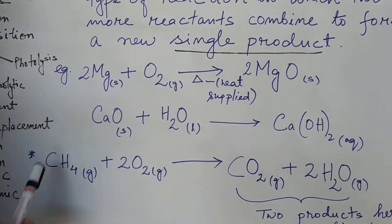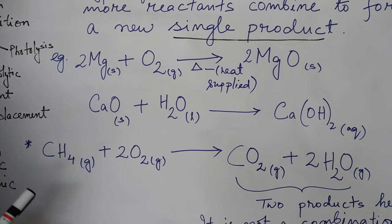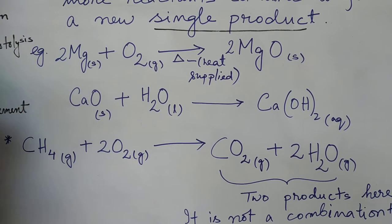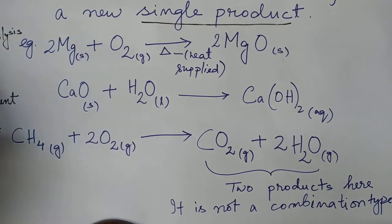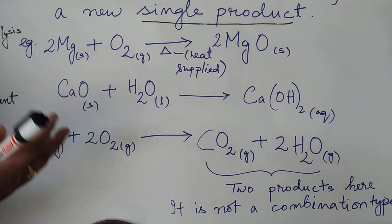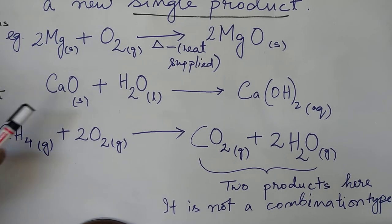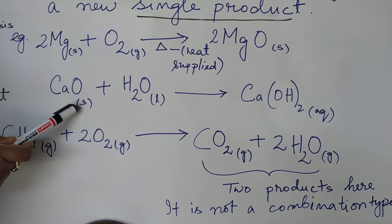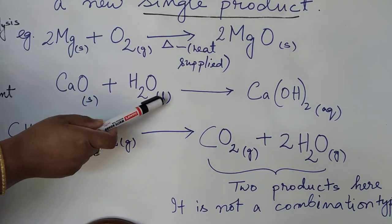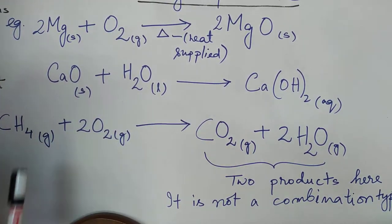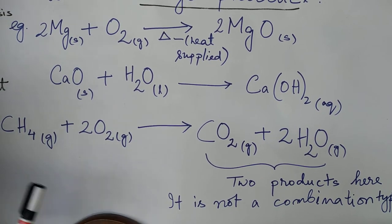So here I have used a delta symbol. This is in chemistry we use this term as delta, and it means heat is supplied. That means you burn first the magnesium ribbon. That's why first heat is supplied, and then after heat is again given out. Then calcium oxide reacts with water and gives calcium hydroxide, and calcium hydroxide will remain in solution form.